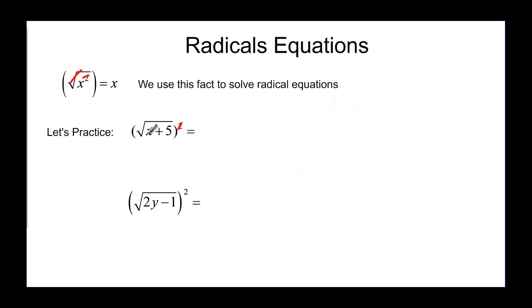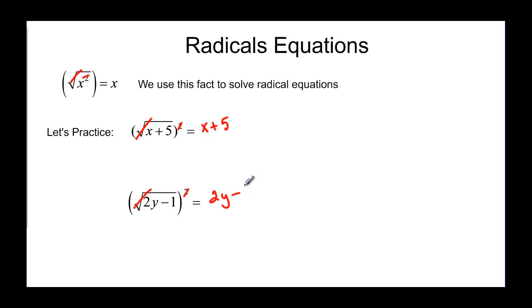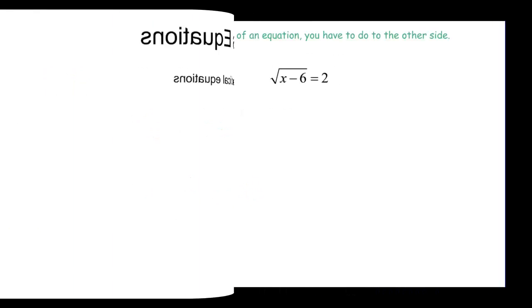The square and the square root cancel each other out and we're just going to have x plus 5. Down here again, the square and the square root cancel each other out and we're just left with what's underneath: 2y minus 1.